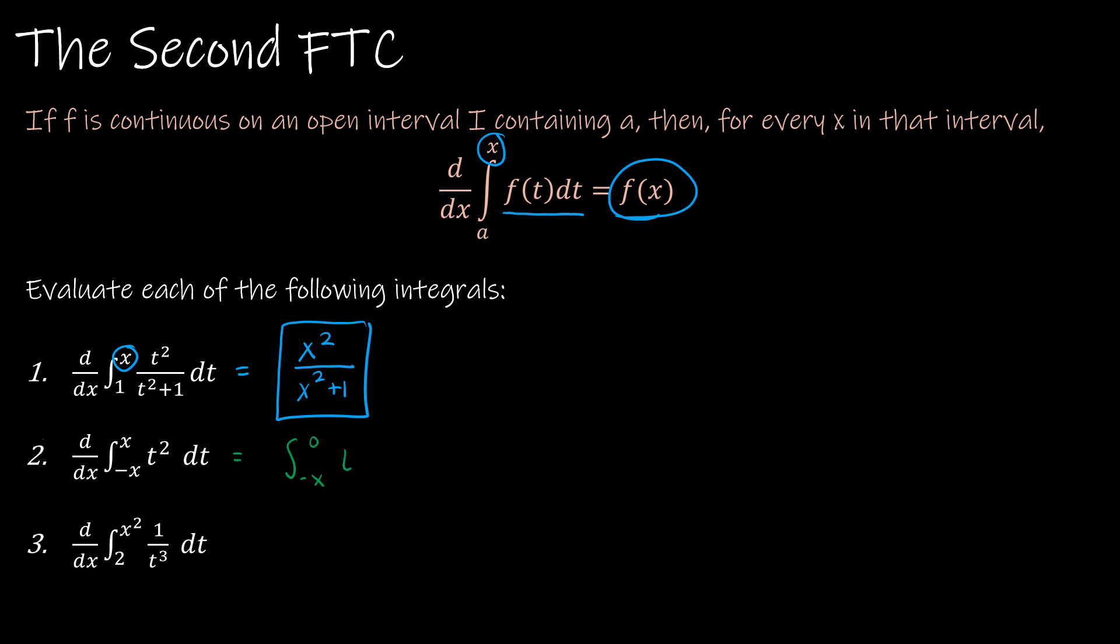So if I think about breaking this into negative X to 0, T squared DT, plus 0 to X, T squared DT. What's going to happen is from negative X to 0, I'm going to get negative X squared. And then from 0 to X, I'm going to get X squared, and I'm actually going to end up with 2X squared.